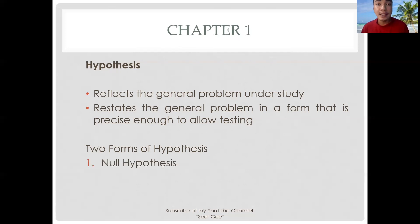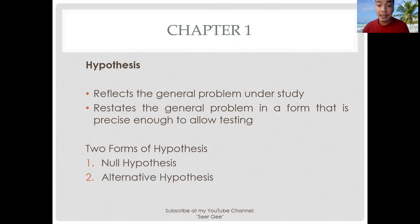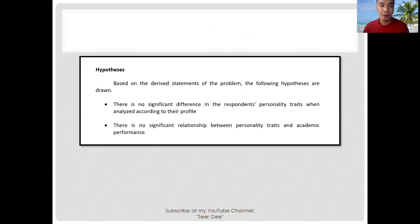The first is in the form of a null hypothesis, which states that there is no relationship between the independent and dependent variables under study. Another way is the alternative hypothesis, which states that a relationship exists between the independent and dependent variables. Most of the time, a hypothesis is stated in the form of a null hypothesis, as shown in the sample.